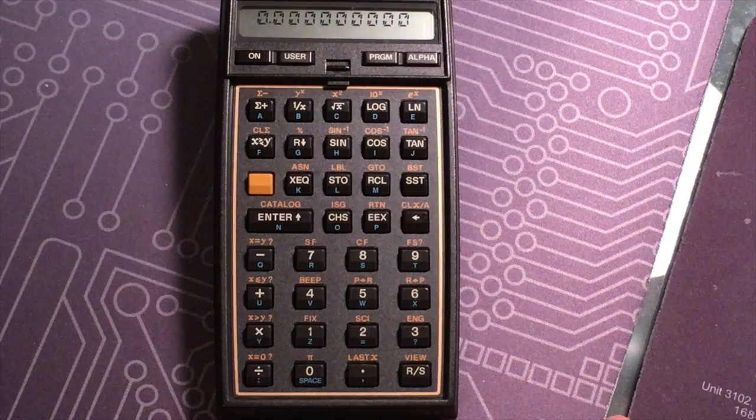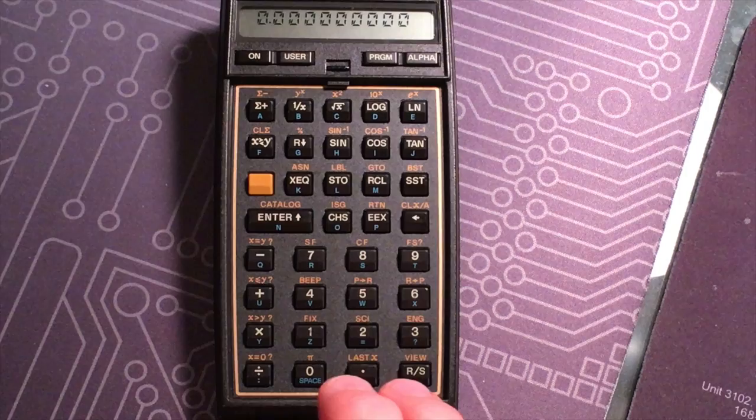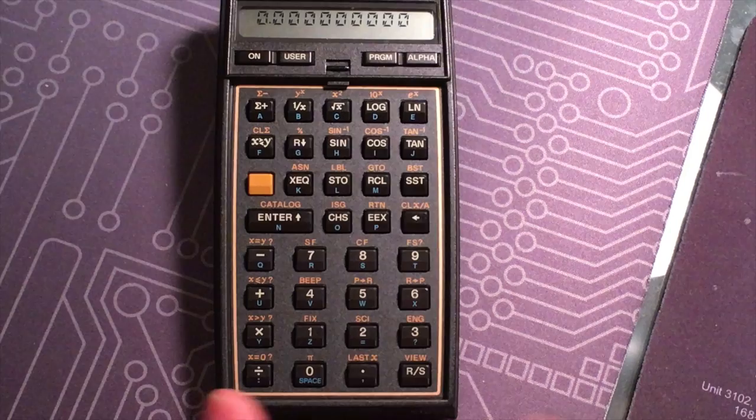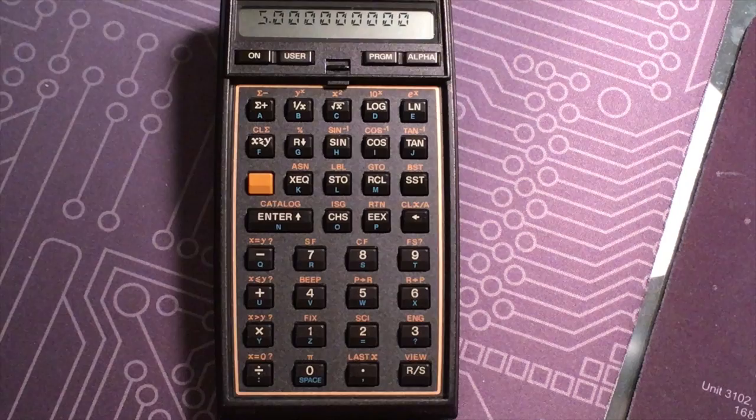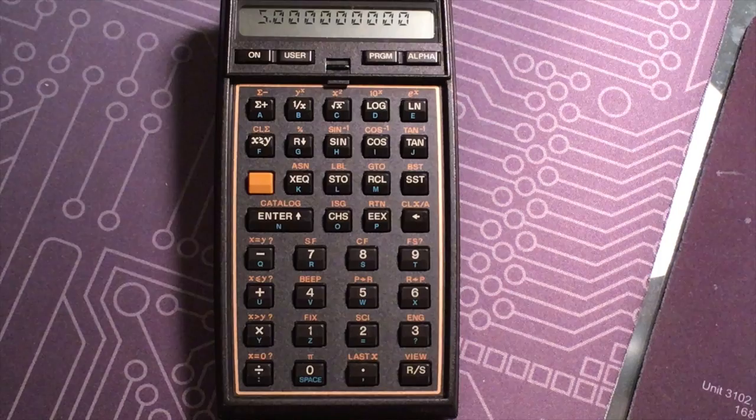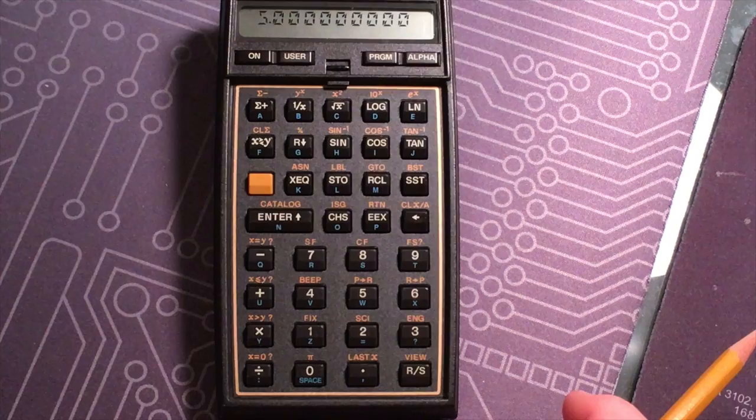That was the basic operation. For this reverse Polish notation, the operator is going to be on the right of the operands. If I wanted to add two numbers like 2 and 3, you do 2 enter 3 plus, so plus is the operator on the right. There's no equal sign. You don't really see it on a simple calculation like that, but for long calculations using reverse Polish notation can really save you a lot of keystrokes.